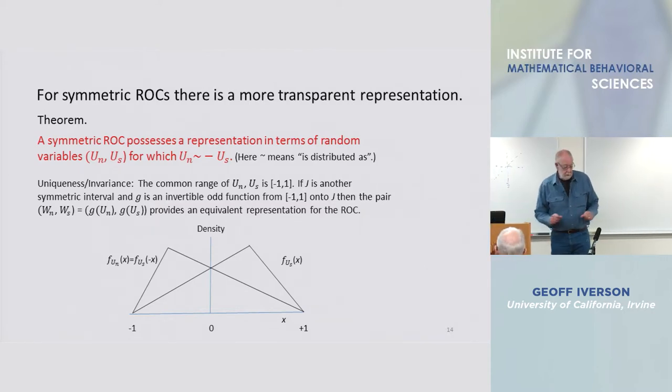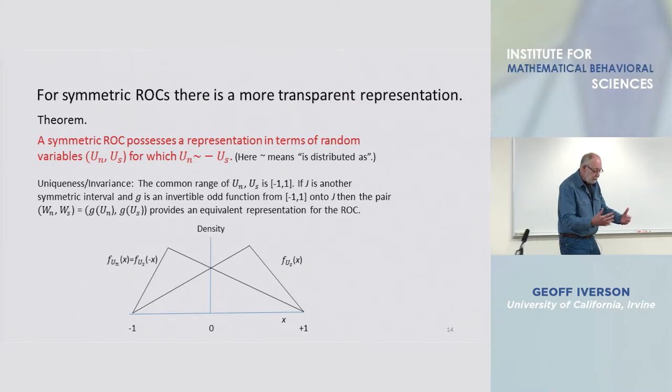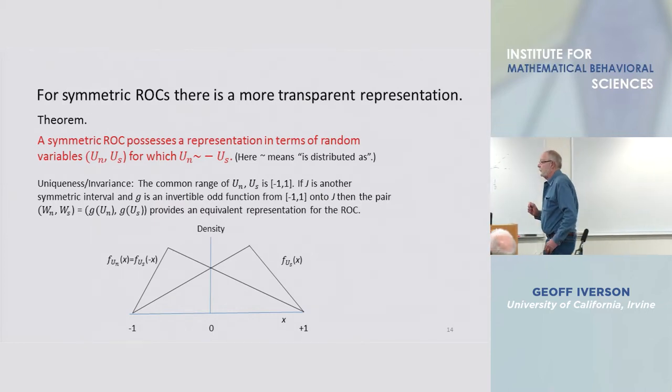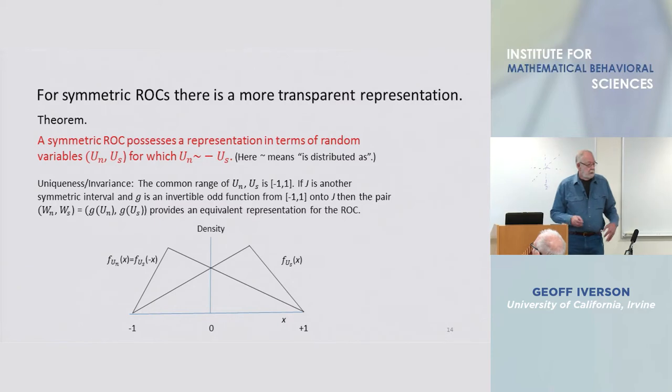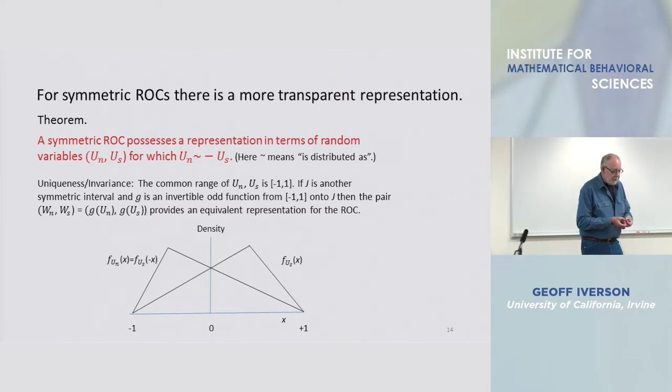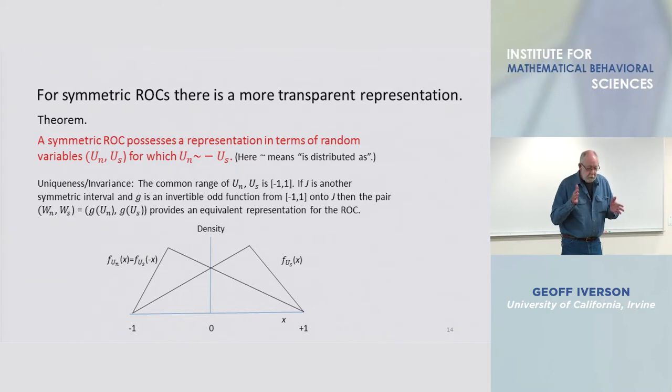So we throw away this original representation where both random variables had a range of 0 to 1, and now we pick a different representation on an interval symmetric about 0, so plus values and minus values occur.